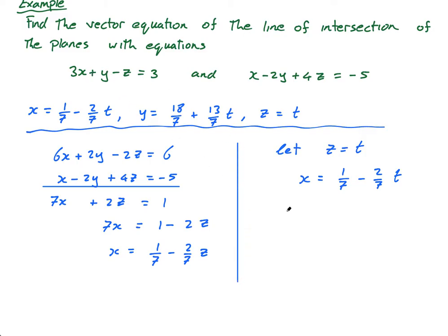So let's choose this equation. I'm just going to put a line down here so there's no confusion. Okay. So I can now say, let's sub into equation one. So I can say 3x, which is 3 times one seventh minus two sevenths T plus y minus z, which is T, minus T equals 3.